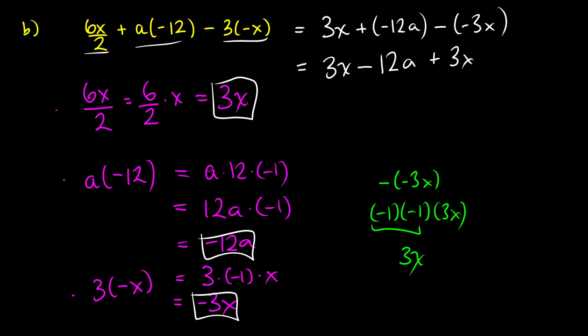So that's almost our final result. The last thing we can do to simplify this is we can take our 3x's together. So I have three of something, I have three more of something, and that gives us a total of 6x. And then we subtract 12a. So that is the final solution here to this problem.